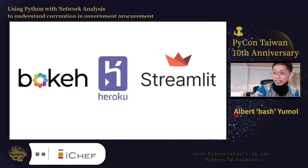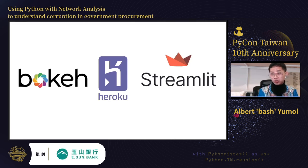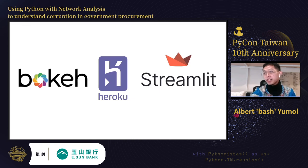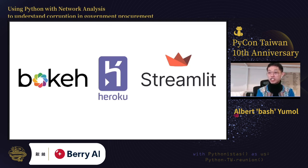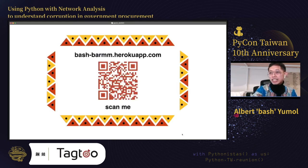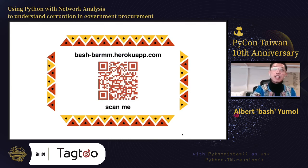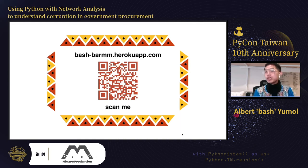I used Bokeh, another Python library, to render the network generated by NetworkX. Bokeh is a cool Python tool for dynamic visualization. I also used Heroku for deployment of the web application I created using Streamlit. Streamlit is a very popular Python framework to deploy machine learning models fast. Heroku has free and paid tiers depending on your data needs. You can visit the prototype by scanning the QR code or accessing the link bashfarm.herokuapp.com for the prototype of the Philippine procurement analysis.